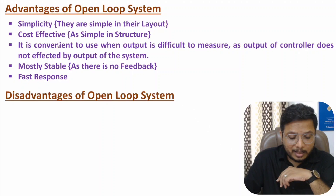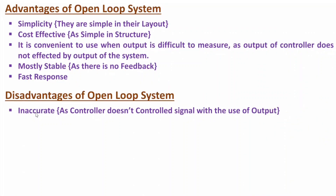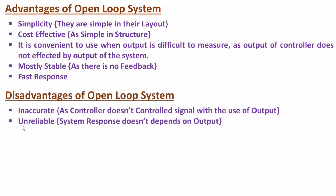Now regarding disadvantages, open loop systems are inaccurate in nature. The reason is the controller doesn't control the signal using the output — as there is no feedback, control action is based on input only and not on output. That's why open loop systems are inaccurate. Open loop systems are unreliable as well, because the system response does not depend on the output — it depends only on the input, since there is no feedback.